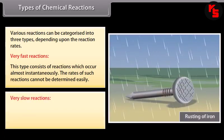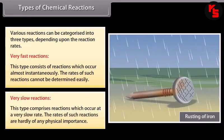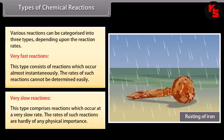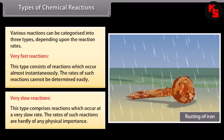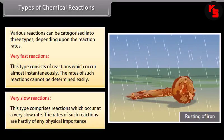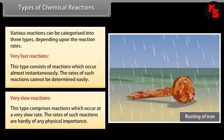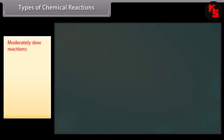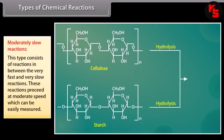Very slow reactions: this type comprises reactions which occur at a very slow rate; the rates of such reactions are hardly of any physical importance; these reactions may require months or even years for their completion. For example, rusting of iron. Moderately slow reactions: this type consists of reactions in between the very fast and very slow; they proceed at a moderate speed which can be easily measured. For example, hydrolysis of starch.